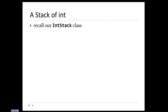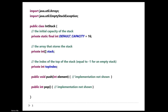Earlier in the course, we implemented a stack of int or a stack of string. We've done one using a list and we've implemented another stack using an array. For the array-based stack, we had a class that looks something like this. We had a stack called int stack. Internally, it had an array of elements that we used to store the elements of the stack, and a field called top index that stored the location of the top element in the array. Push and pop had a little bit of code in them, but otherwise that was the complete implementation of our stack class.